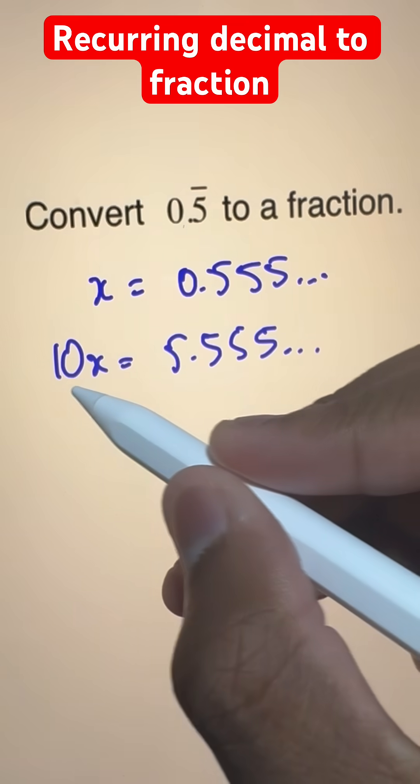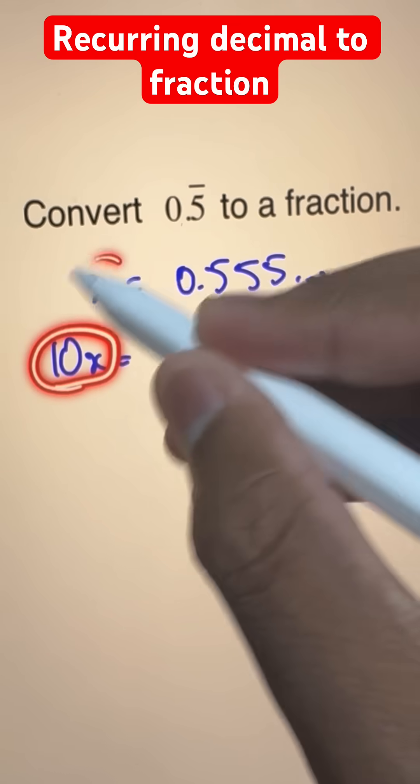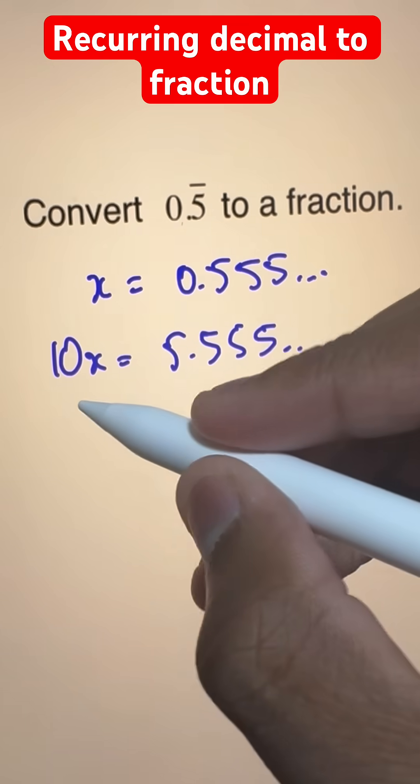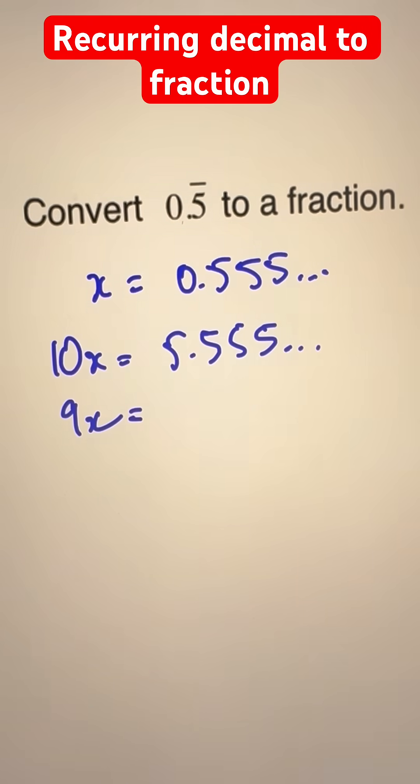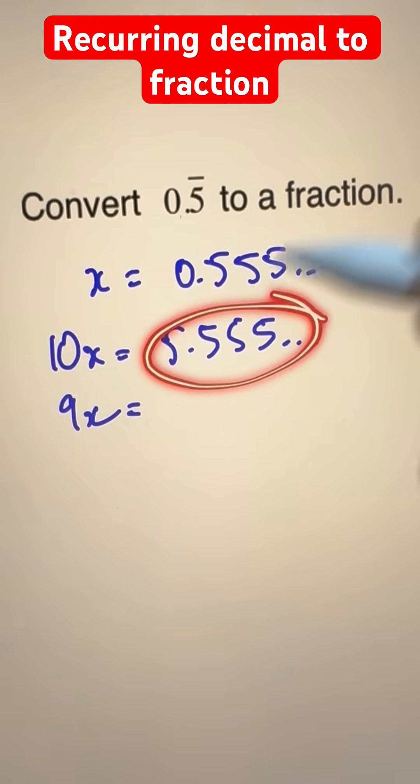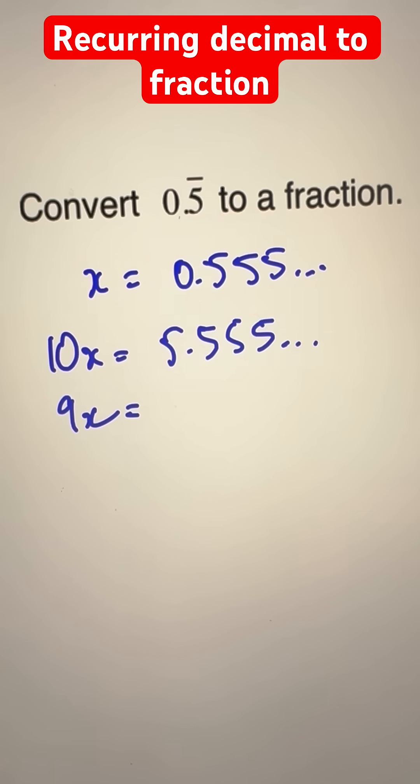Now the reason we did this is so that we can subtract this one minus this one. So 10x minus x. That's 9x. So we can subtract this minus this. When we do that,